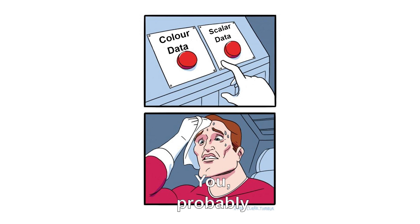Final thing we need to talk about before we actually dive into Mari is colour versus scalar data. The Mari documentation defines this very succinctly: colour data exists to be seen, whereas scalar data exists to be calculated. If you look at your 3D model, the colour you're seeing is from the base colour or the spec map - those are colour maps. Scalar data however - things like displacement, bump maps, normal maps, roughness - you don't actually see those maps, they're just used to be calculated by the shader. Anything visually seen in your render is colour data; anything calculated to do something in your shader is scalar data.